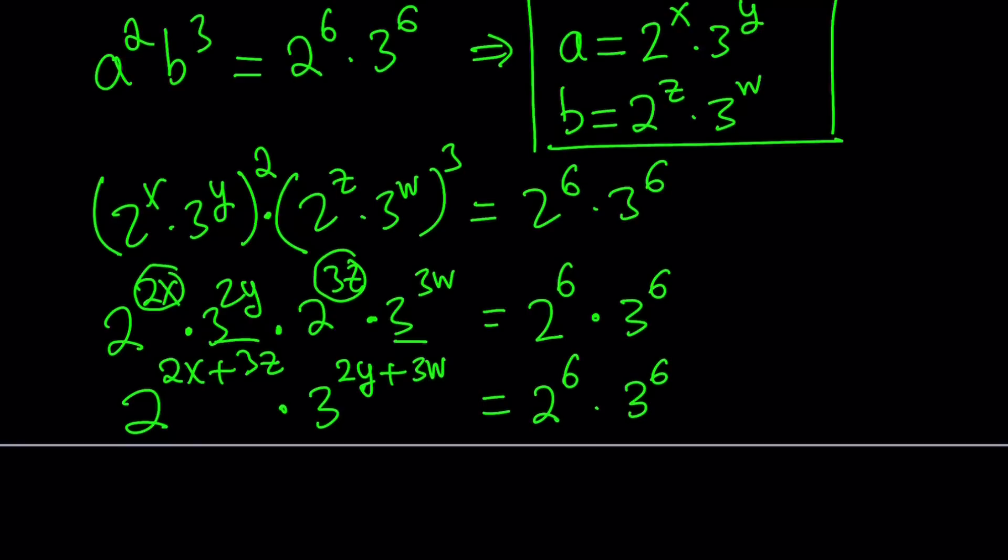We have 2 to the power 2x and 2 to the power 3z. We can add these exponents because they have the same base, so it becomes 2 to the power 2x plus 3z. Then we can do the same thing for powers of 3, that gives us 3 to the power 2y plus 3w. This equals 2 to the 6 times 3 to the 6. We basically separated the 2s and 3s on the left-hand side, and they're already separated on the right-hand side. We can set the powers of 2 equal to each other. This doesn't always work with real numbers but with integers it does. You can't get a power of 3 from a power of 2.